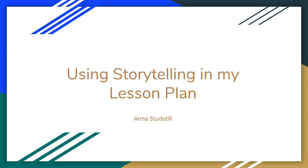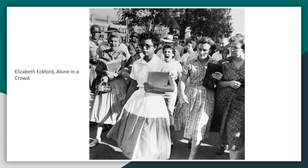I would start out my lesson by telling the story of Elizabeth Eckford. Elizabeth Eckford is the woman in the center in this picture. She is 15 years old at the time this photo was taken, and she was one of the Little Rock Nine, which was the first group of students to integrate a school in the United States. This photo was taken on September 4, 1957, which was the first day of school and the first day that the Little Rock Nine were meant to integrate the school.